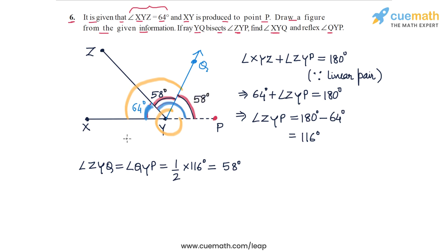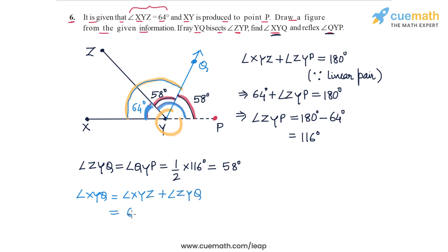Now it's easy to find the two angles. Angle XYQ is the sum of angle XYZ and angle ZYQ. So angle XYQ equals 64 degrees plus 58 degrees, which equals 122 degrees. So that's the measure of angle XYQ.